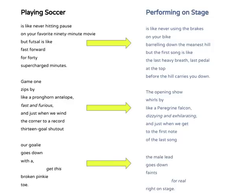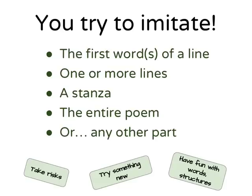Here it is. I created an original poem by imitating some of Kwame Alexander's choices as a writer. There are endless ways I could have imitated this mentor text. I could have only used the opening line and then went on from there. I could have started with the last stanza or the middle stanza. I could have only used the idea of describing my experience using interesting similes. The point is to use the mentor text to try new things in your own writing, and you don't have to do exactly what the author is doing. So now it's your turn — you try to imitate. You could draw inspiration from any part of the mentor text: the first words of a line, one or more lines, a stanza, the entire poem, or any other part.